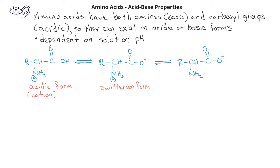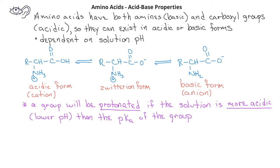So overall the basic form will be an anion. A particular group on the amino acid, whether it's the carboxylate or the amine group, will be protonated if the solution pH is more acidic or a lower pH value than the pKa for the group of interest.